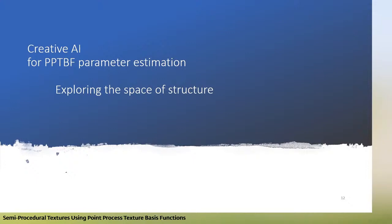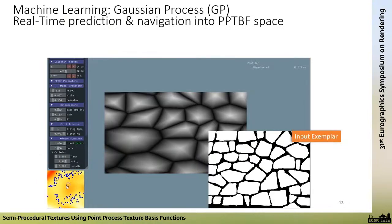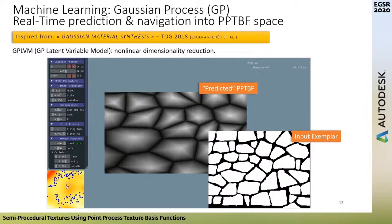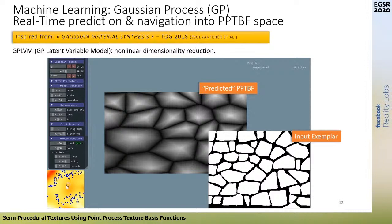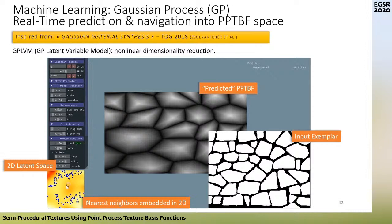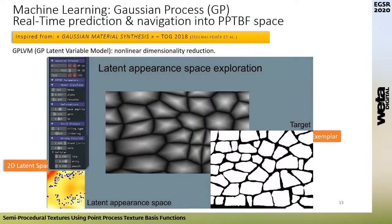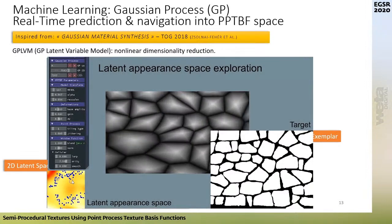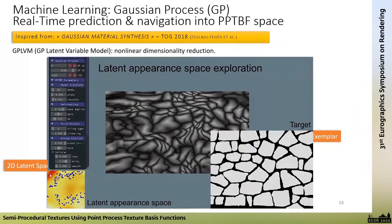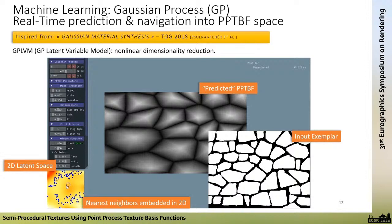We also propose a creative AI approach by exploring the structure space using a machine learning technique with Gaussian processes, inspired by the 'Gaussian Material Synthesis' article from TOG 2018. When we have our nearest-neighbor candidates, we embed them in a low-dimensional 2D space using a GPLVM (Gaussian Process Latent Variable Model) — a non-linear dimensionality reduction technique. This gives a 2D latent space map with projected nearest-neighbor candidates in blue. The Gaussian process enables interpolation and new predictions in between, so you can navigate this space and make new predictions with on-the-fly procedural rendering.